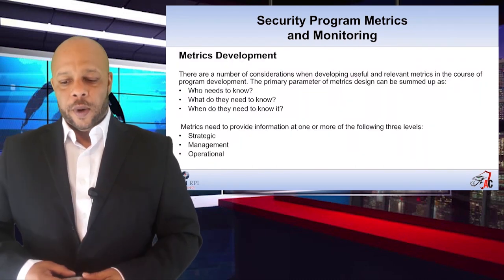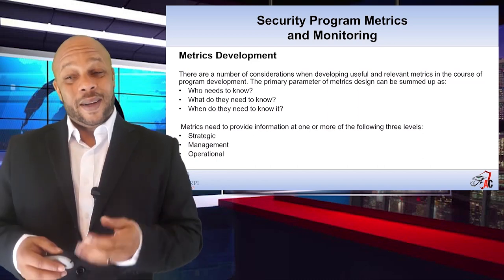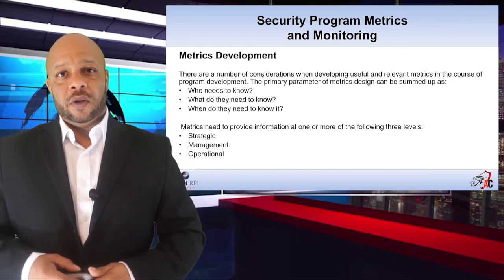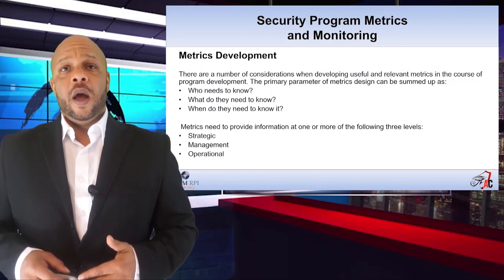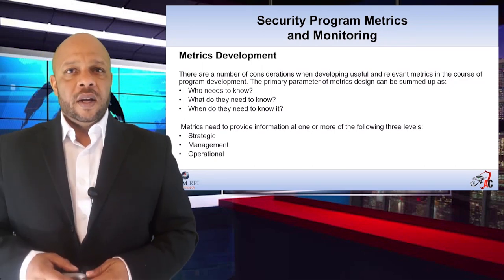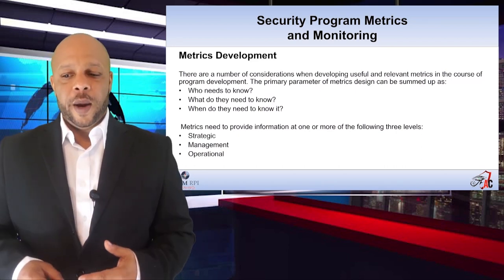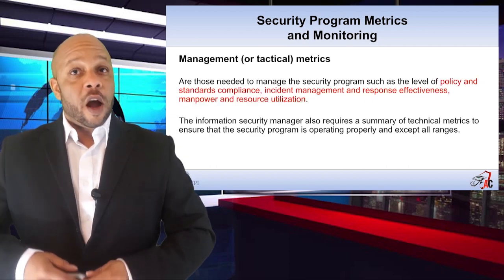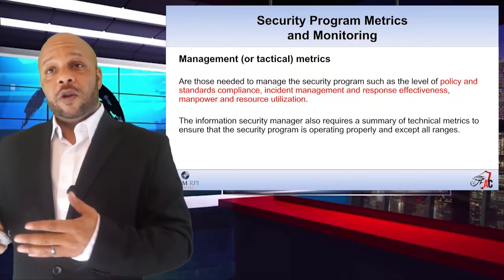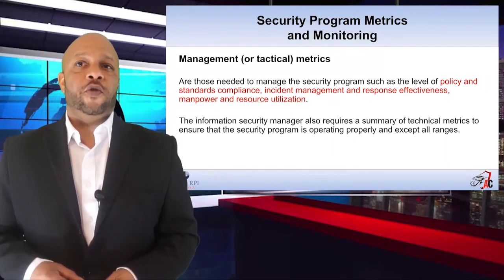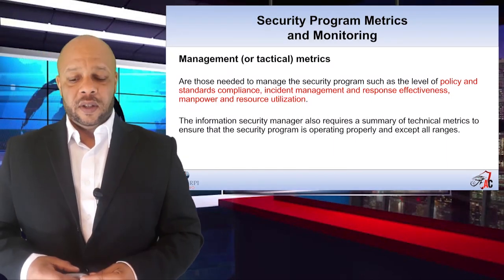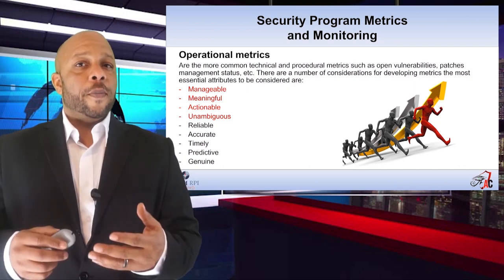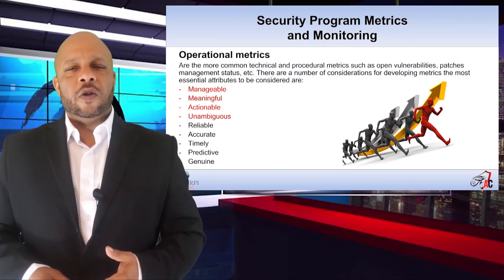Next, we have metrics development. There are a number of considerations when developing useful and relevant metrics, but as long as you stick to the rule of three, you'll be fine: who needs to know this information, what exactly do they need to know, and when do they need to know it? These metrics need to provide relevant information at one or more levels — strategic, management, or operational. Strategic metrics help identify whether we're on track, on target, and on budget. Management or tactical metrics help identify the level of policy and standards compliance, incident management and response effectiveness, and manpower and resource utilization. Operational metrics, probably the most noticeable of the three, cover things like open vulnerabilities and patch management performance.